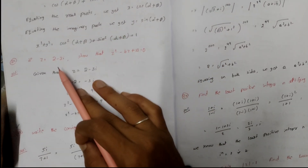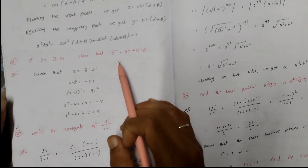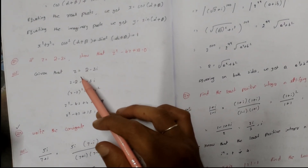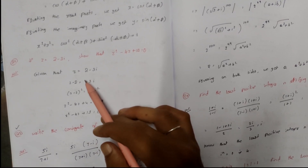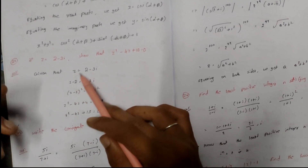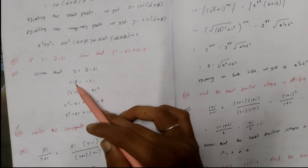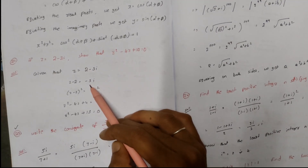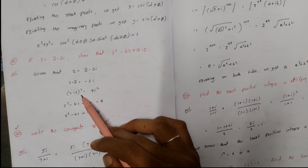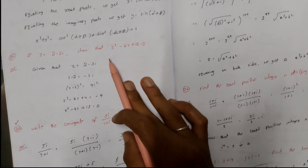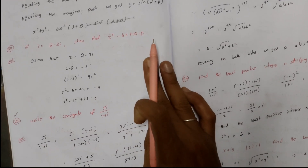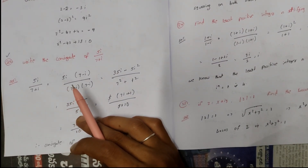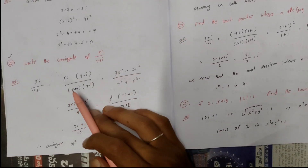If z = 2−3i, show that z²−4z+13 = 0. Given z = 2−3i, so z−2 = −3i. Squaring both sides: (z−2)² = (−3i)² = −9. Expanding and simplifying gives z²−4z+4 = −9, so z²−4z+13 = 0.